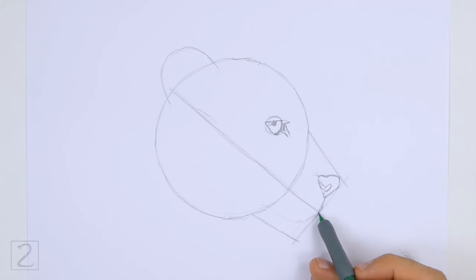When you get the shape of the mouth right, darken the line. Draw the line using short strokes to create a furry texture.